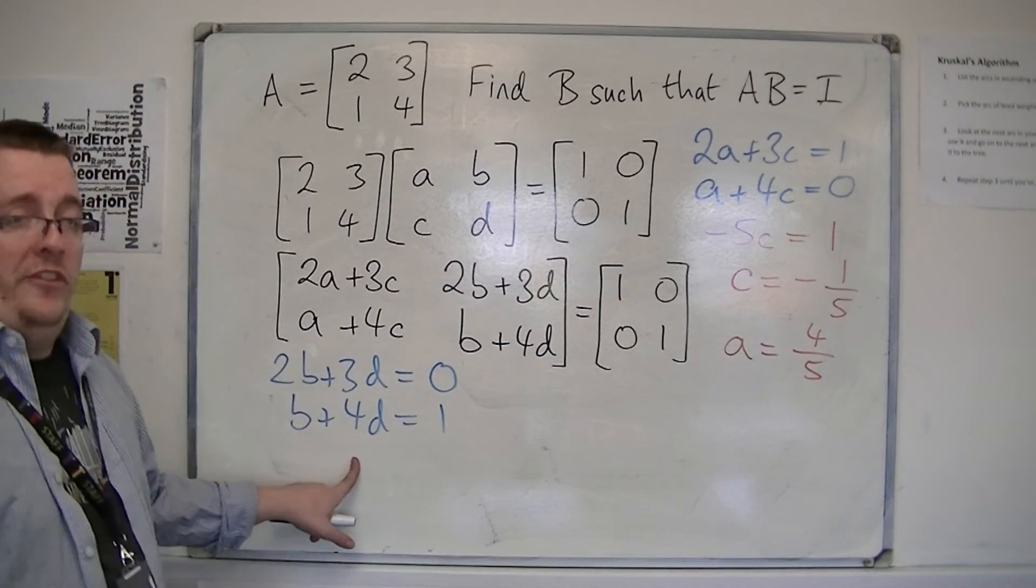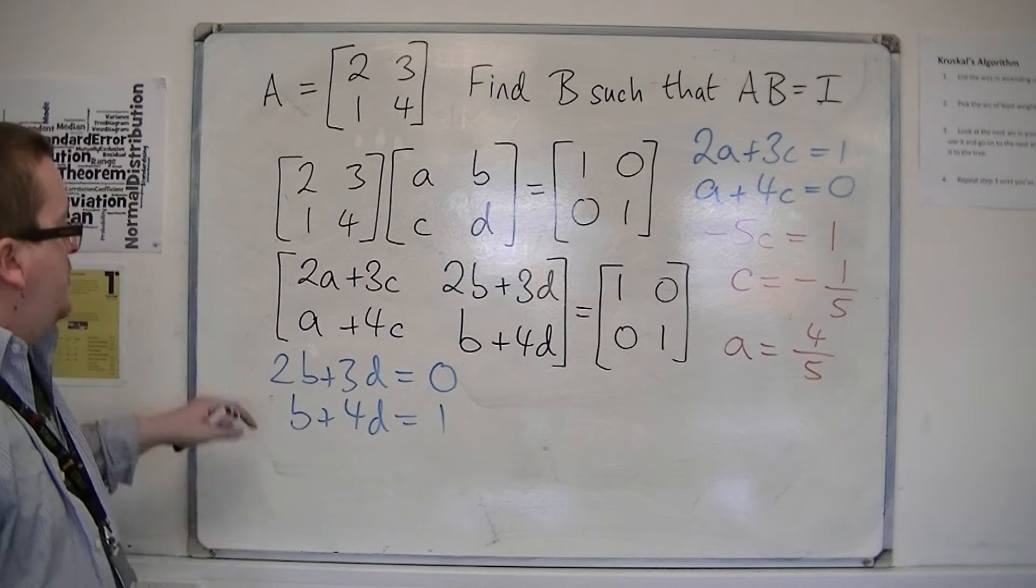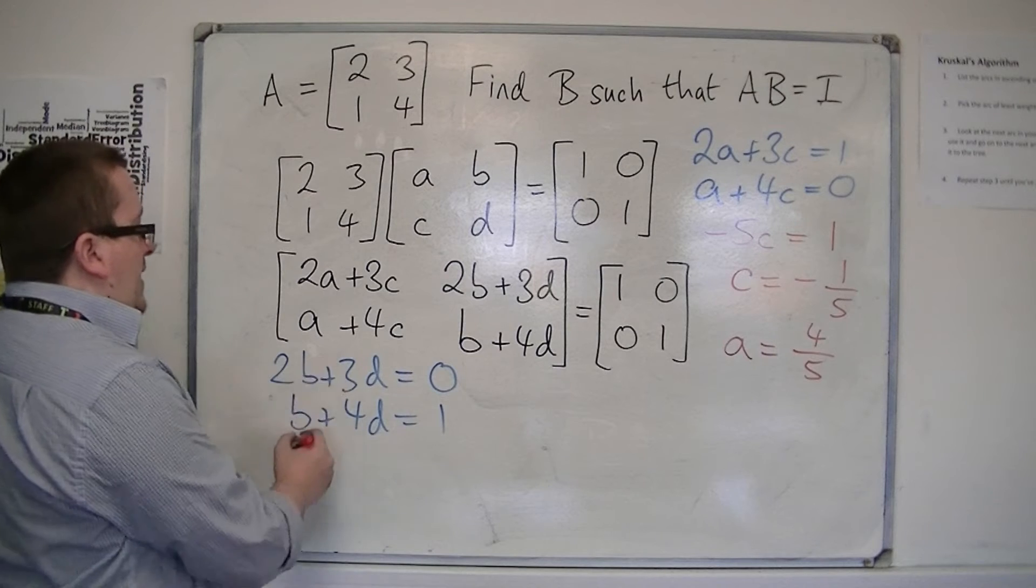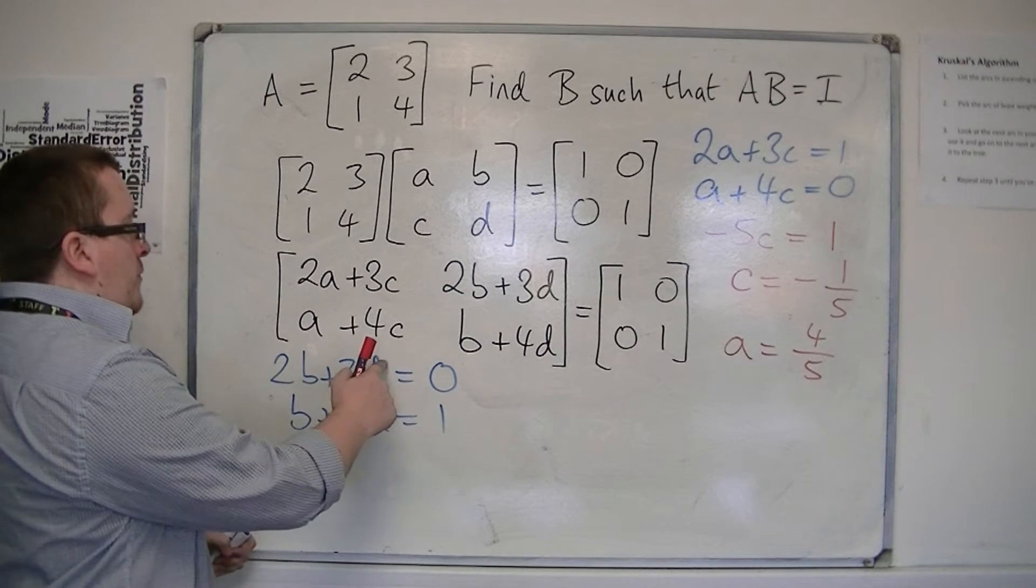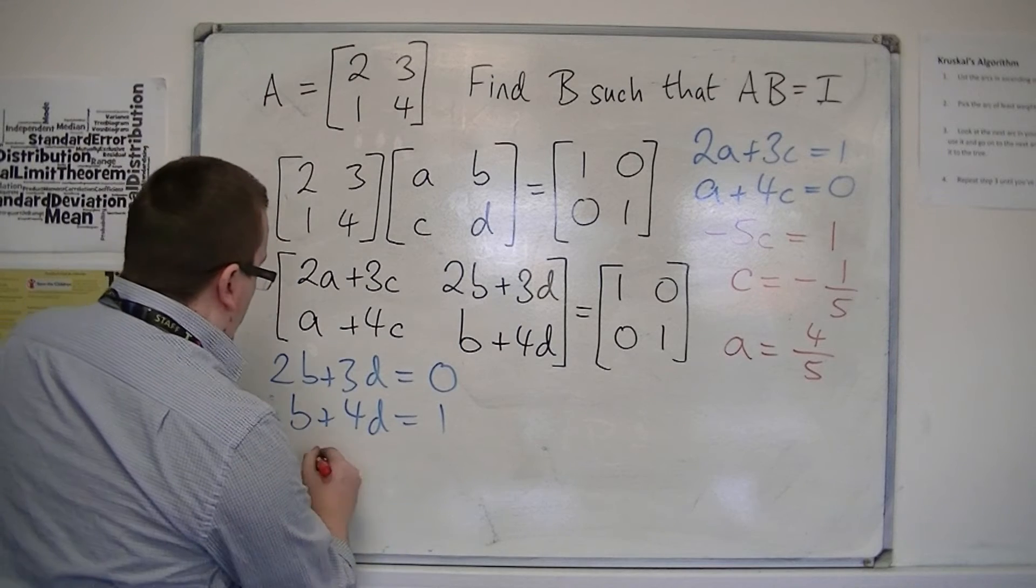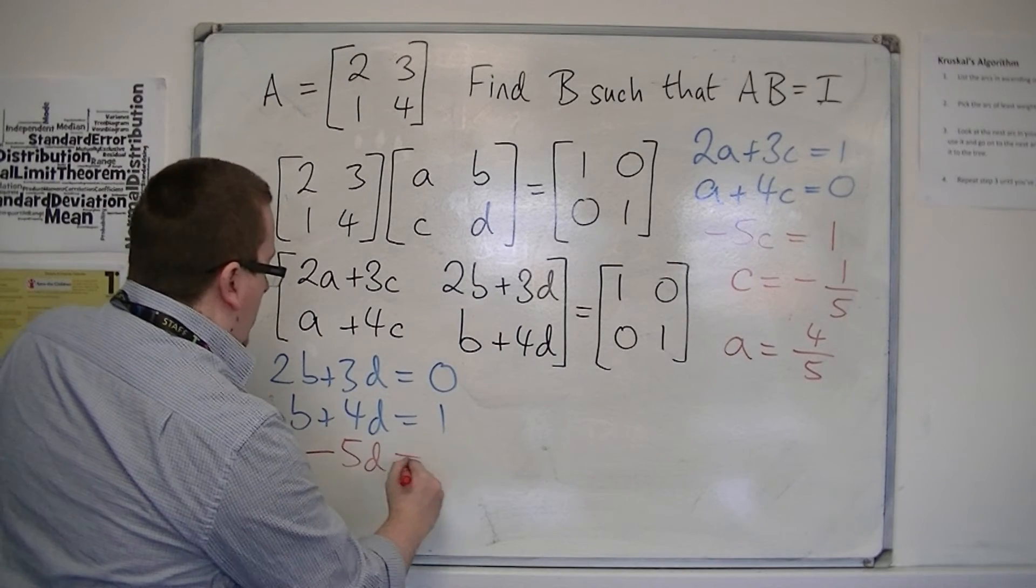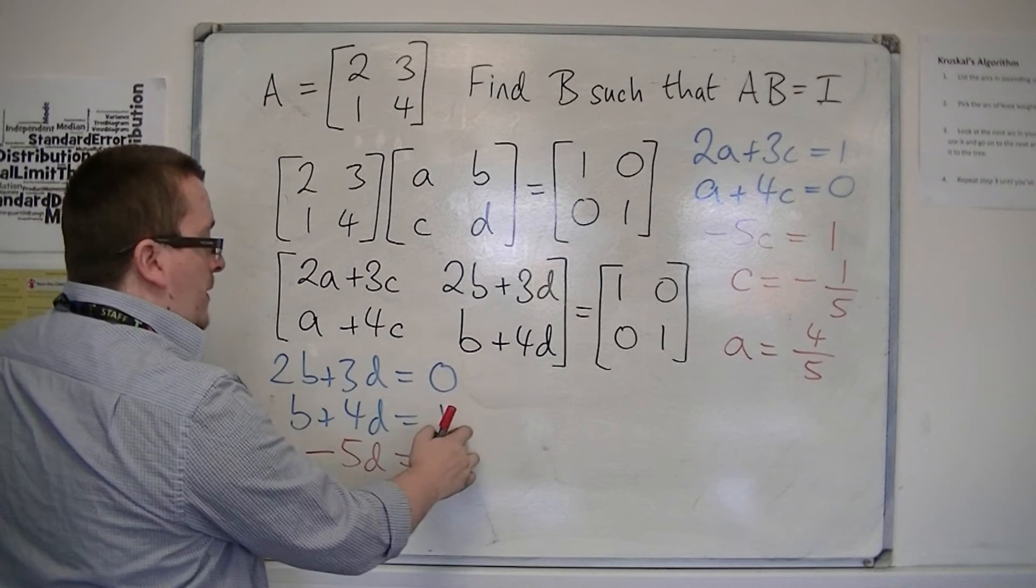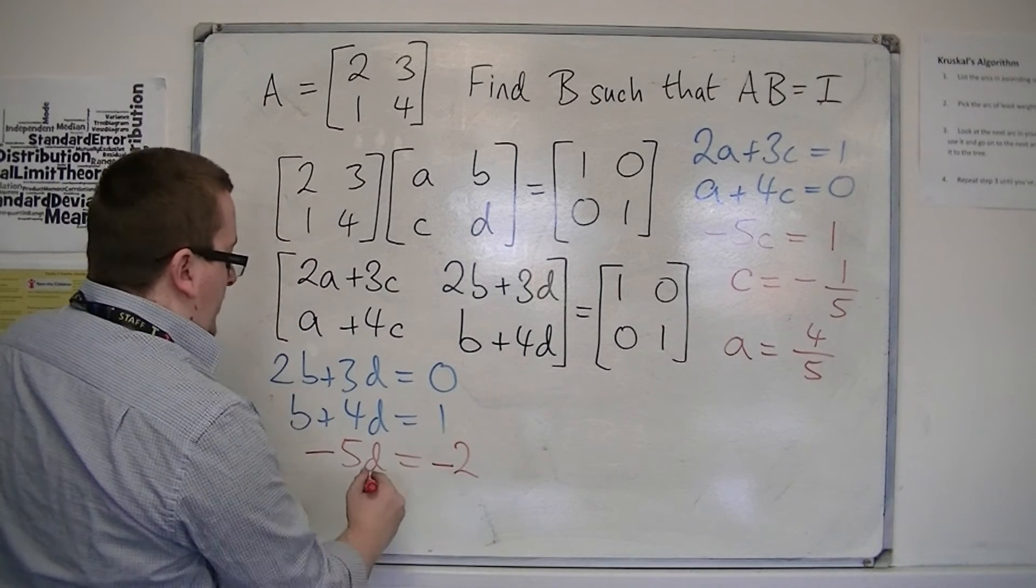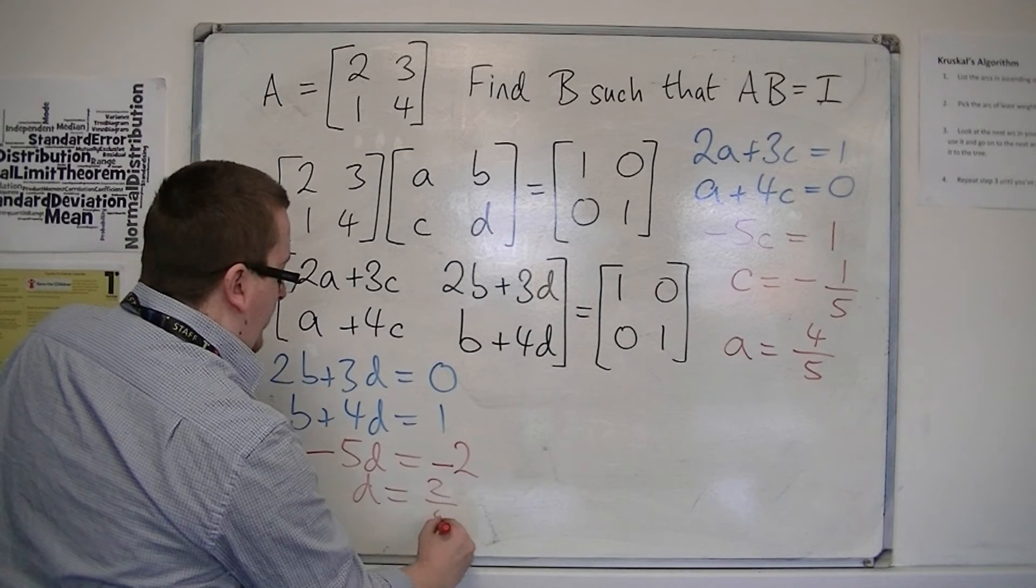Now going on to these two equations, if I do the top equation take away 2 lots of the bottom, that will eliminate the b's. So I've got 3d take away 2 lots of 4d, so that makes minus 5d again, and that's going to be equal to 0 take away 2 lots of 1, so minus 2. So that means that d is equal to 2/5.